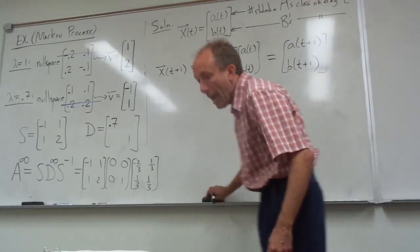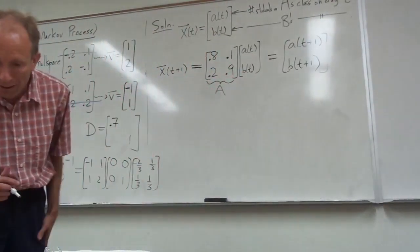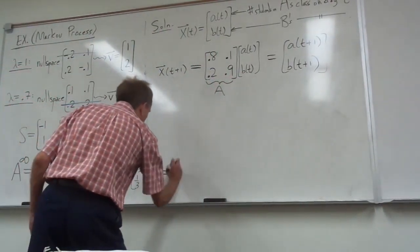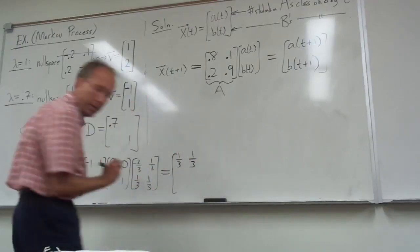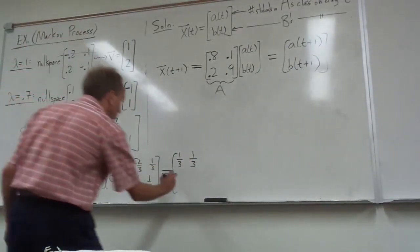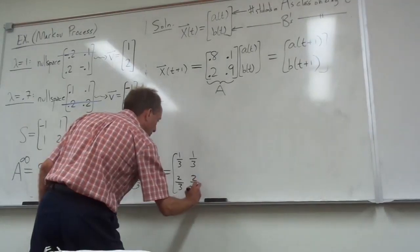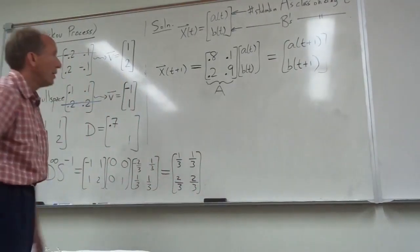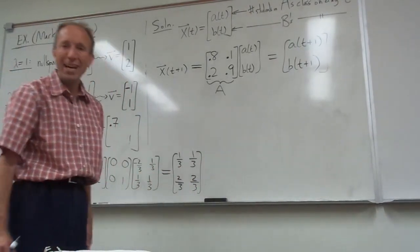And if you now just multiply that all out, I'm going to tell you what you get here. You get 1 third, 1 third. And then on the bottom row, you get 2 thirds, 2 thirds. This is a large power of A.